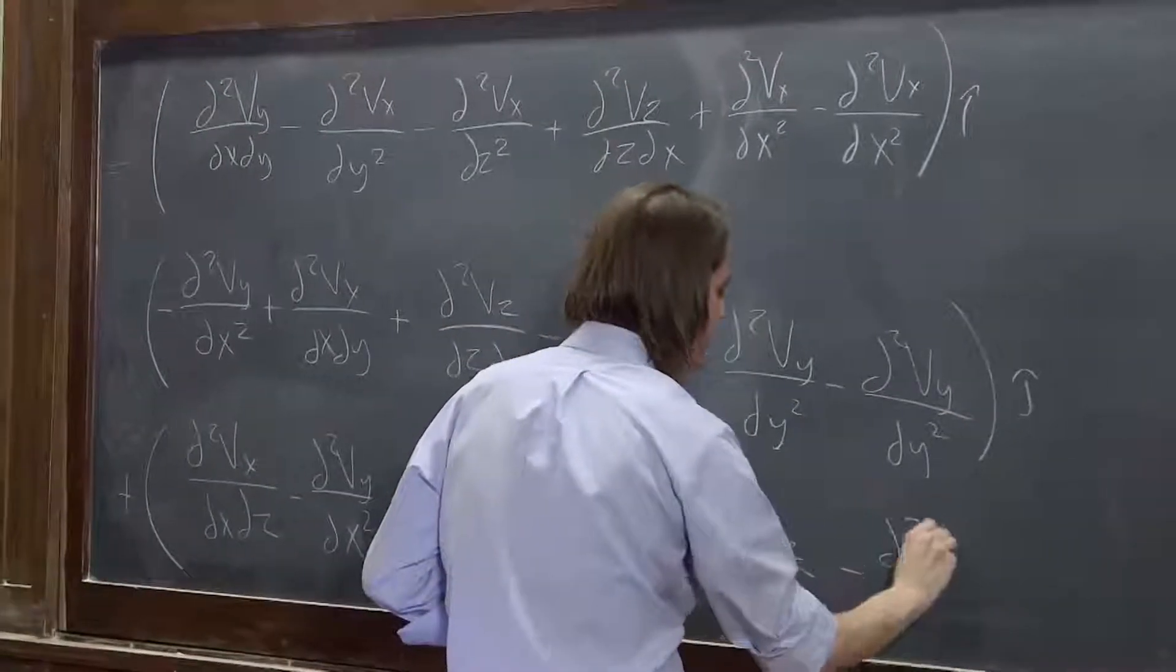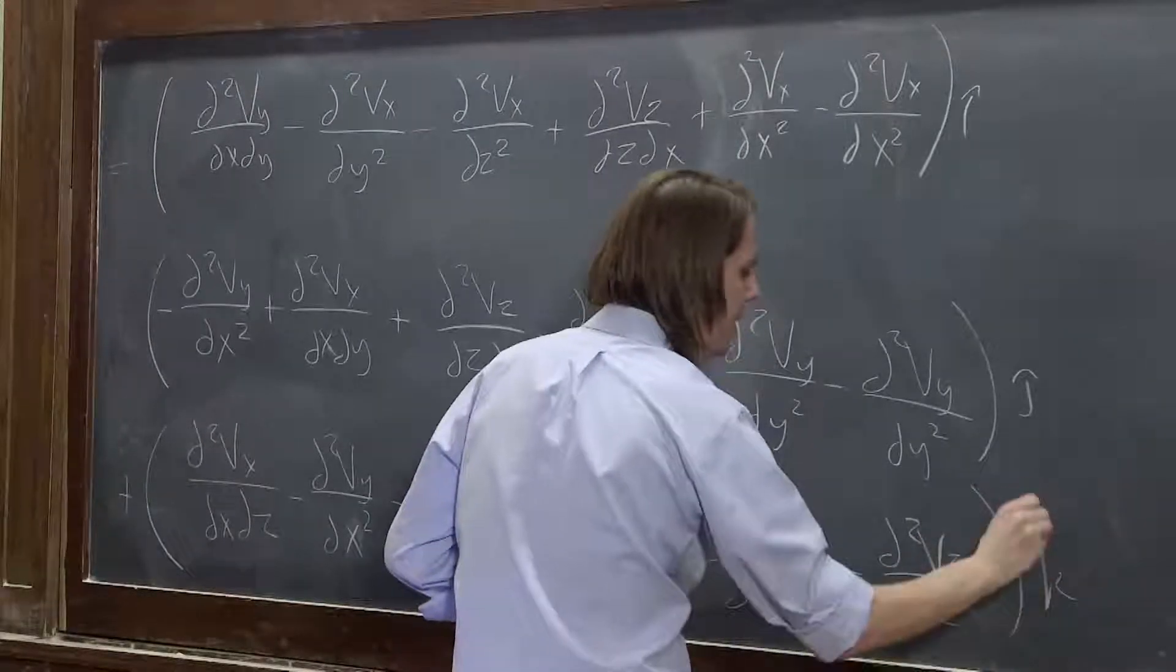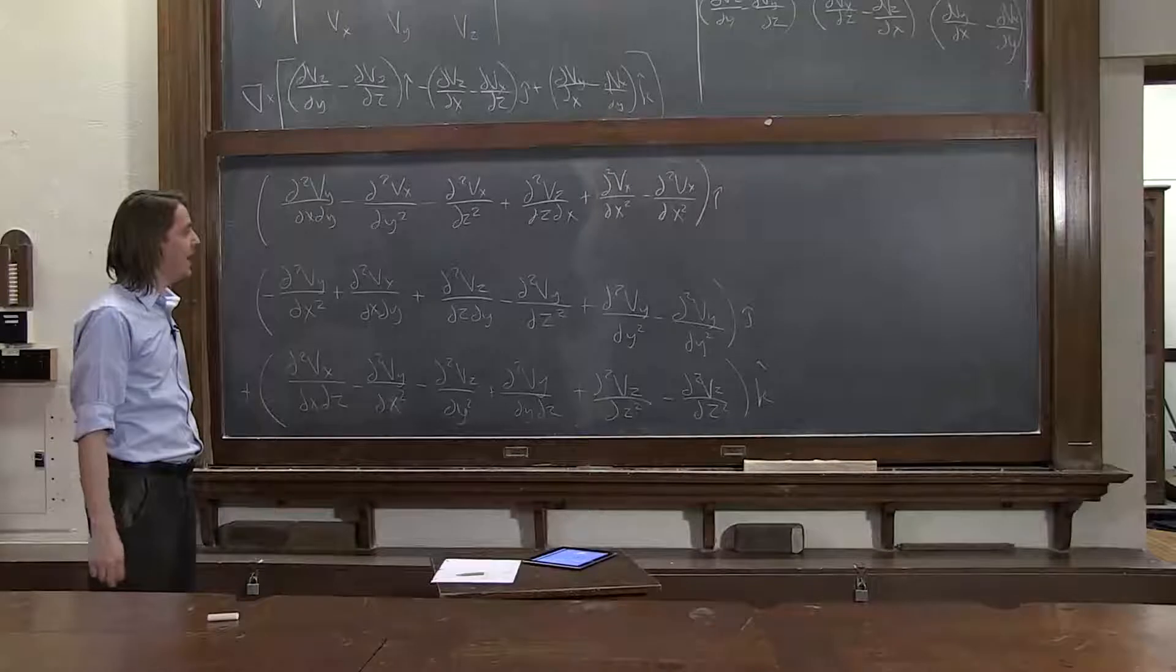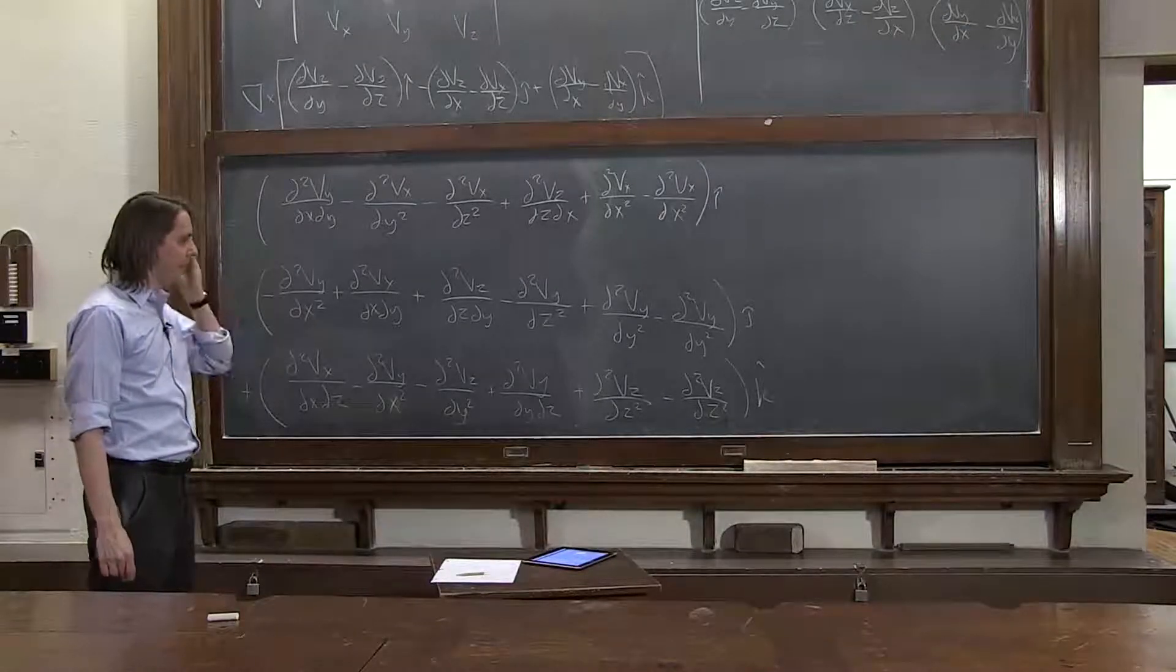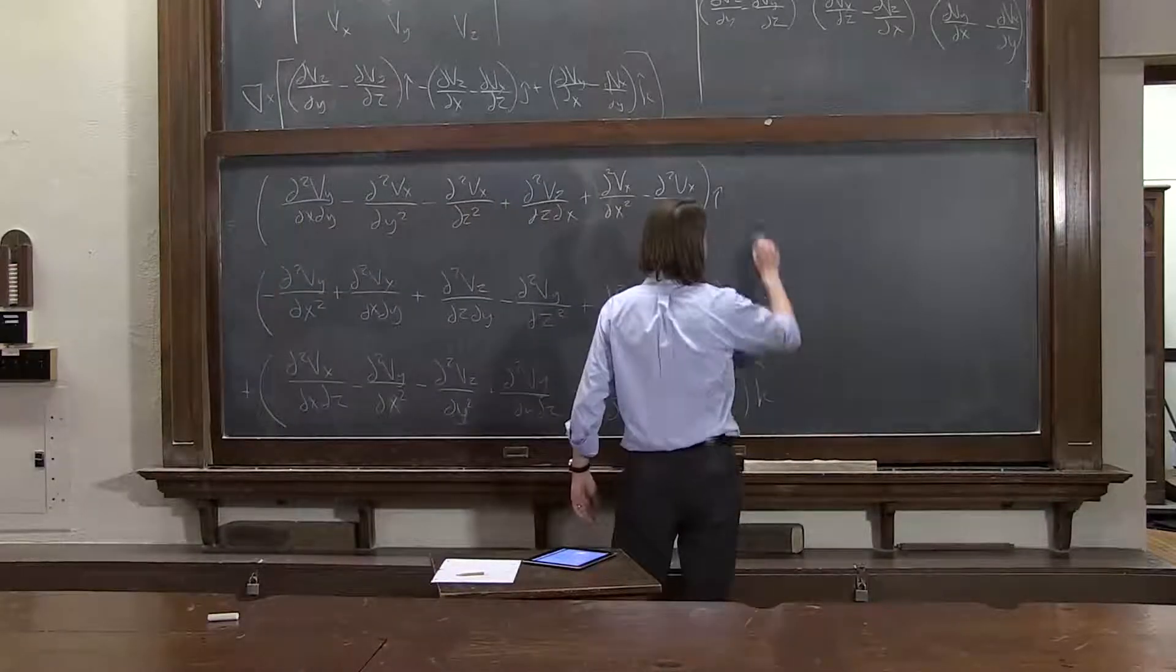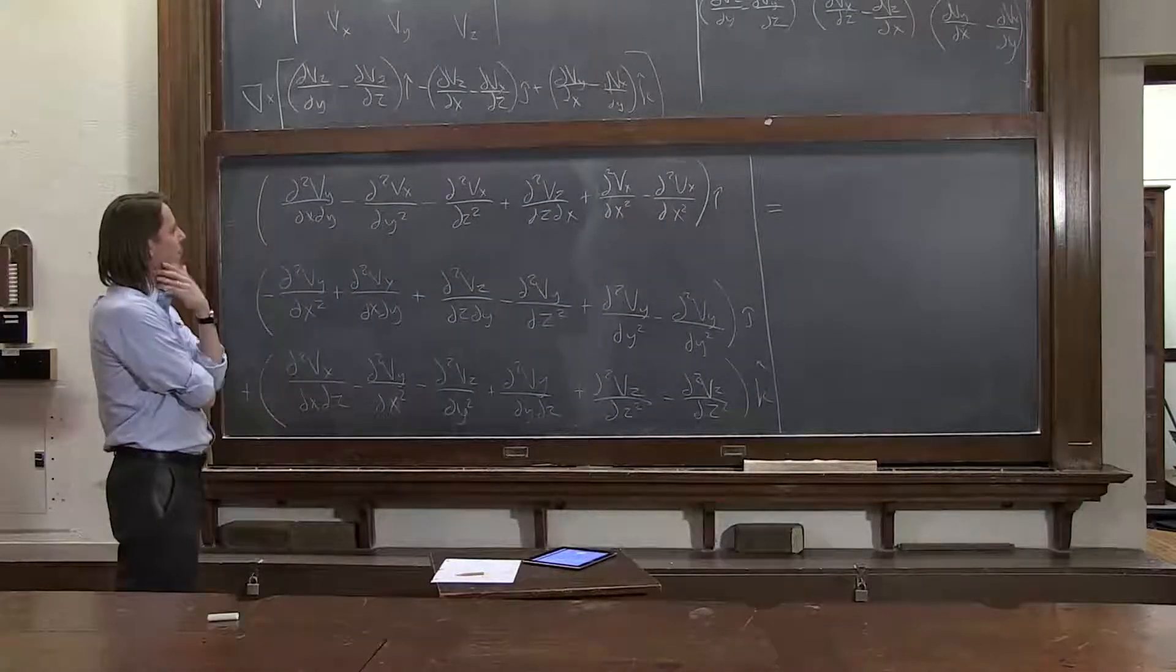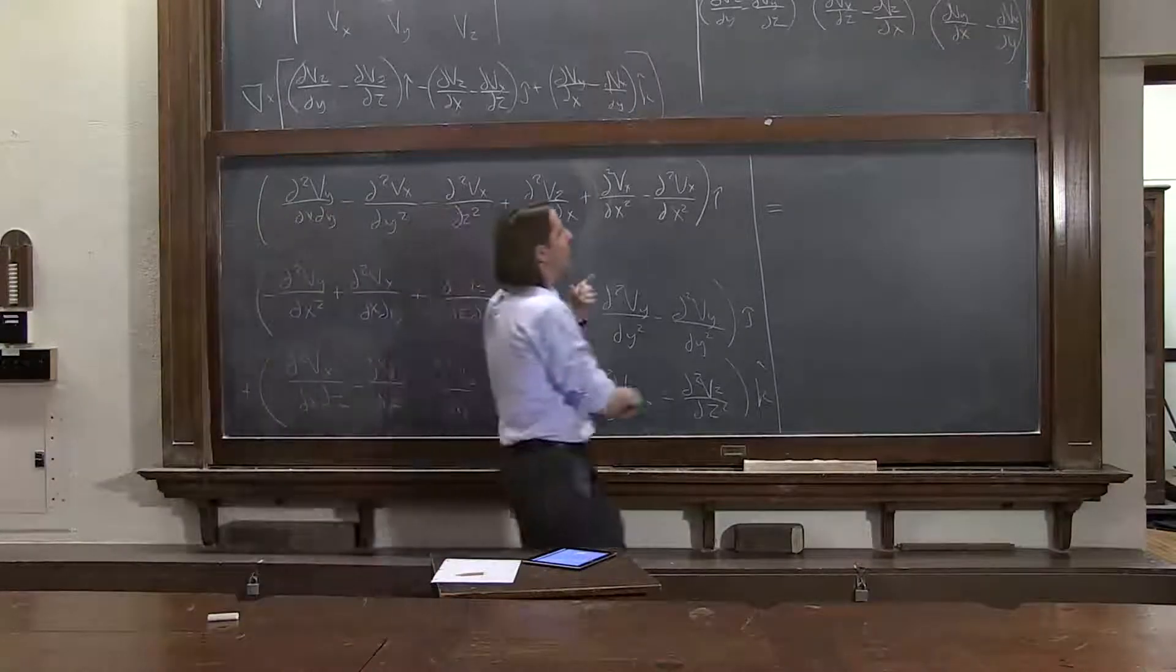All right. Has anything changed? No. We just have added and subtracted the same thing from each one. We're still completely fine. So let's see. What does this equal? Cool. This all equals something. If we look at it, we could start to pick off the components. And we're going to be able to find the gradient of the divergence. Del, del dot v is in there.